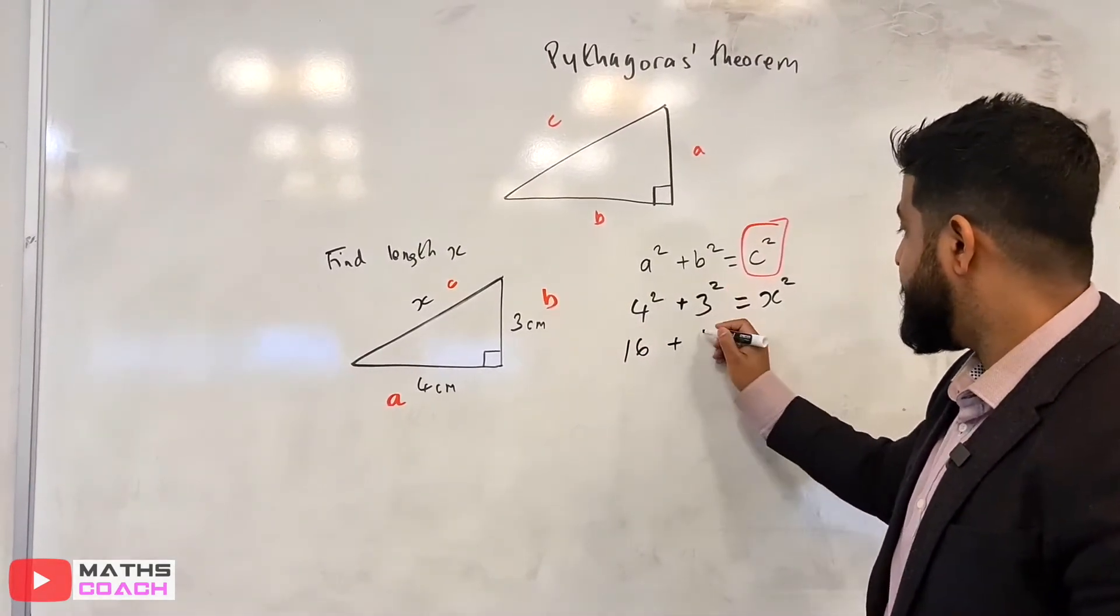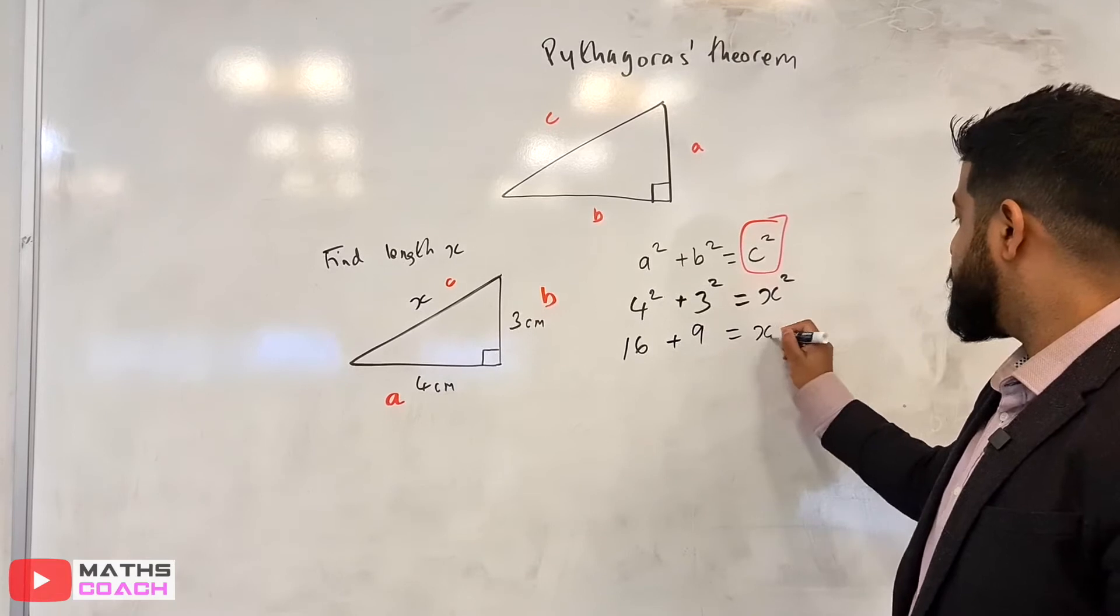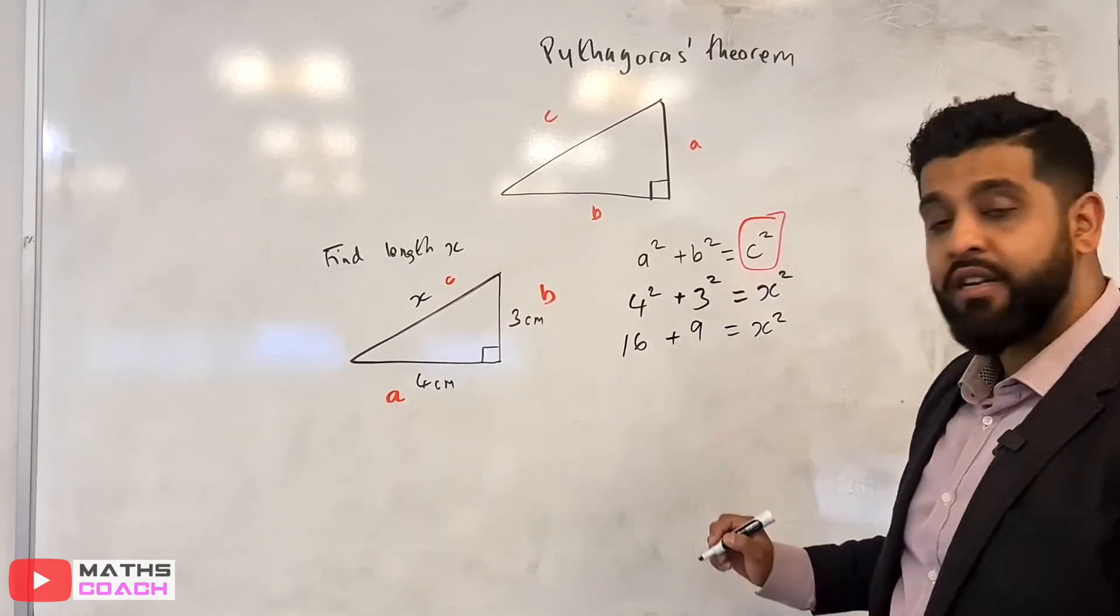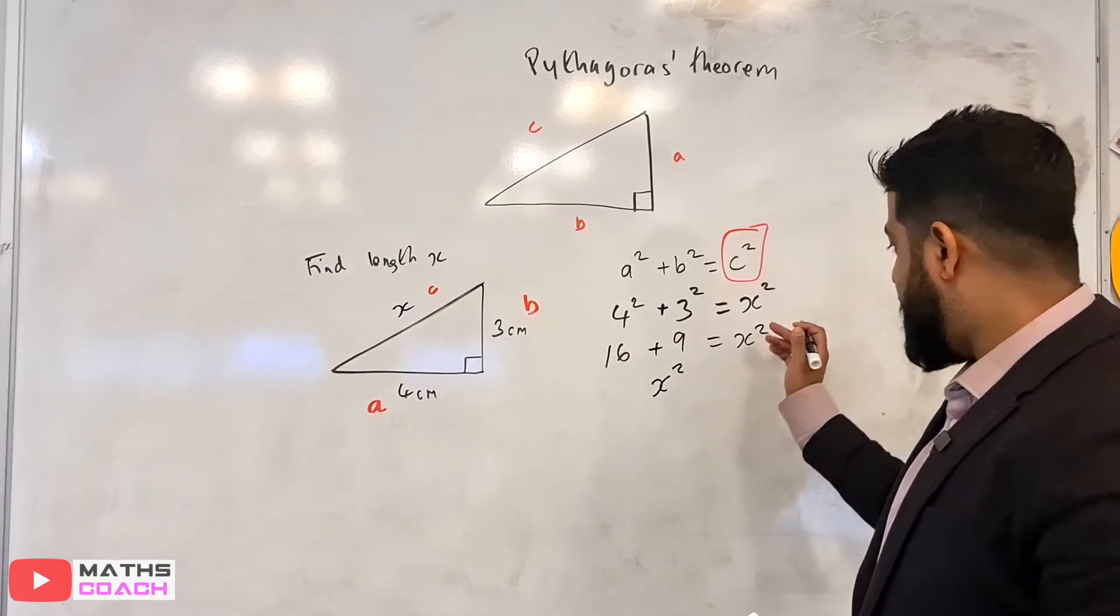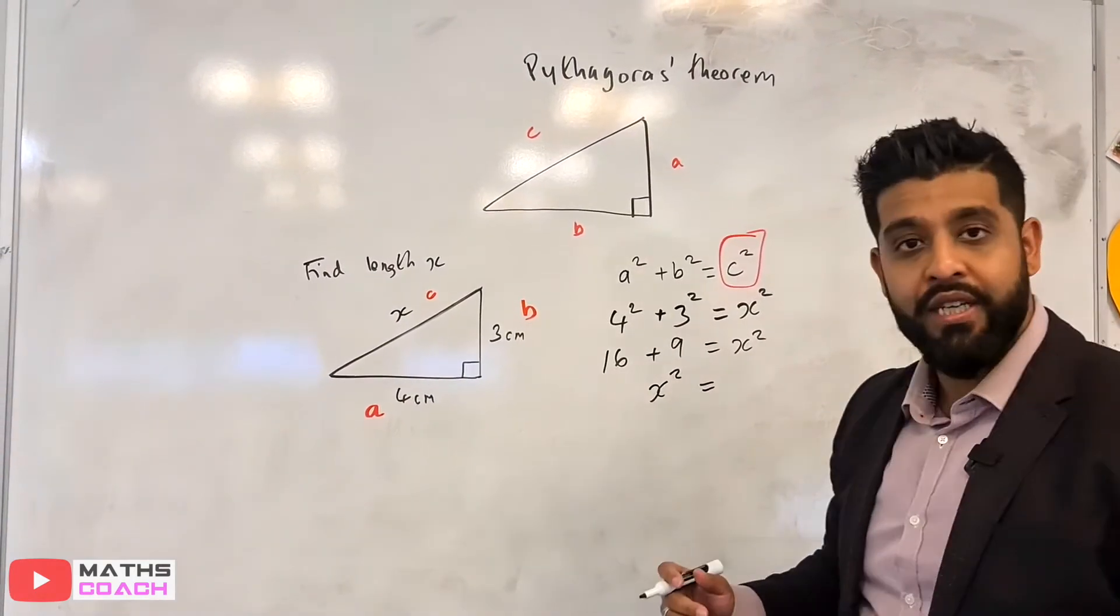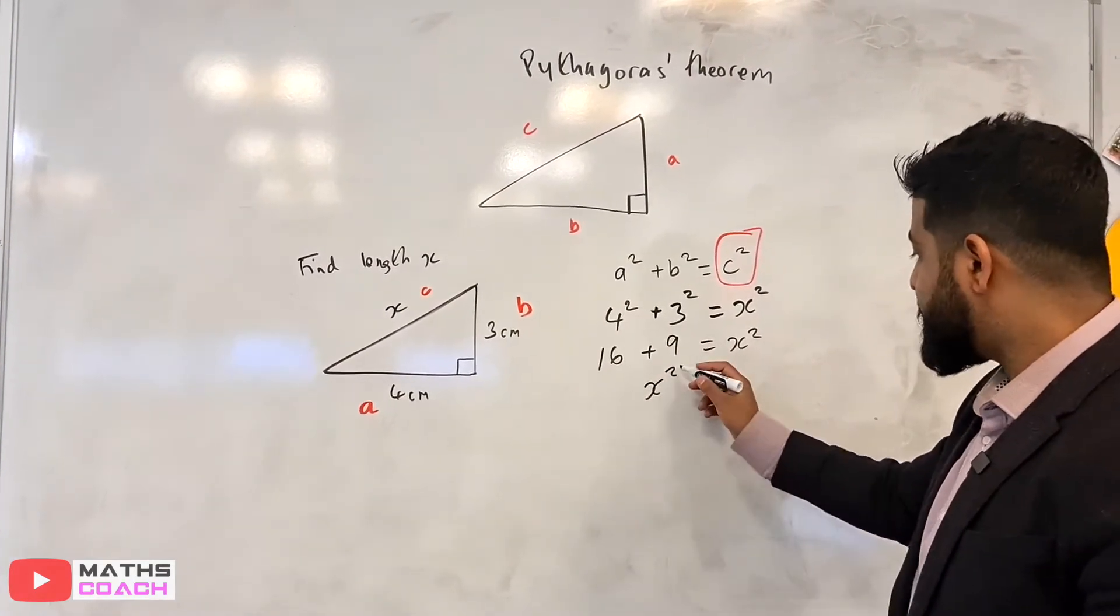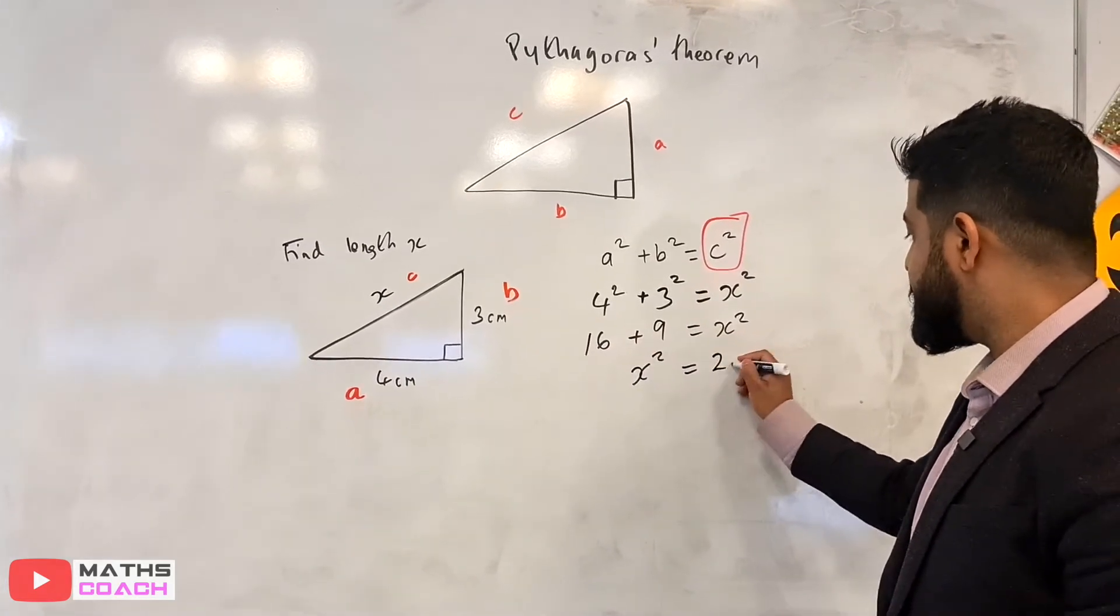9, 3 squared, and that's equal to X squared. 16 plus 9 is 25. I'm just going to swap these around just for better representation really on the board. So X squared is equal to 16 plus 9, which is 25.